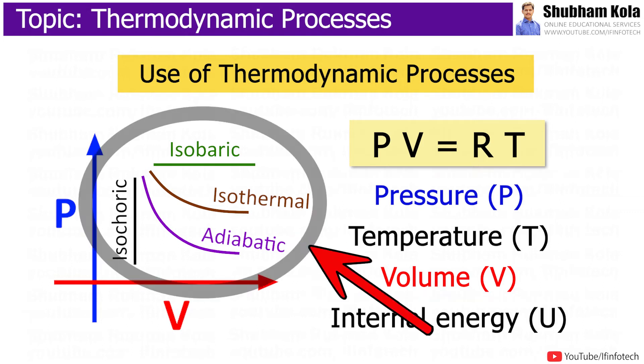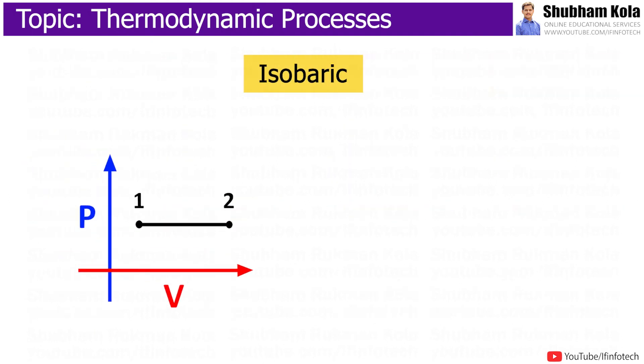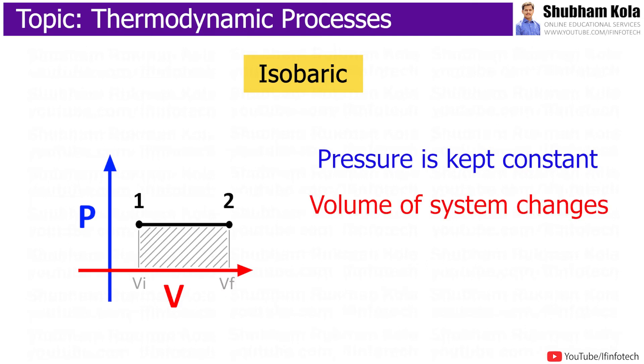The state of system can be changed by different thermodynamic processes. Here, first is isobaric process in which pressure is kept constant. Since the pressure is constant, in this process, the volume of system changes.